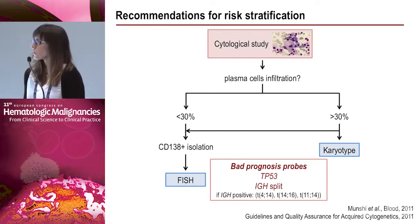When we receive a multiple myeloma case in our laboratory, we first perform cytological study to determine plasma cell infiltration. We then perform FISH in all cases on isolated CD138-positive plasma cells, and we perform karyotyping when infiltration exceeds 30%. For FISH, we apply probes for 17p deletion, IGH split (to detect any IGH rearrangement), and, if IGH is translocated, we characterize t(4;14) and t(14;16) as the bad-prognosis translocations. We can also study t(11;14) to identify a good-prognosis translocation.